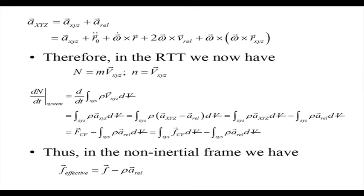In shorthand notation, a_XYZ equals a_xyz plus a_relative, where a_relative collects all these terms: r₀ double-dot, plus omega-dot cross r, plus 2 omega cross v_relative, plus omega cross (omega cross r).